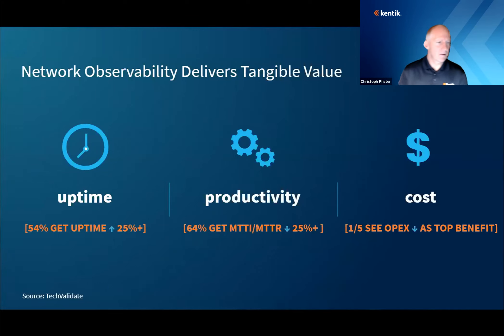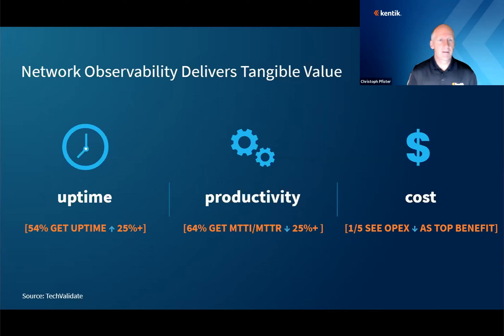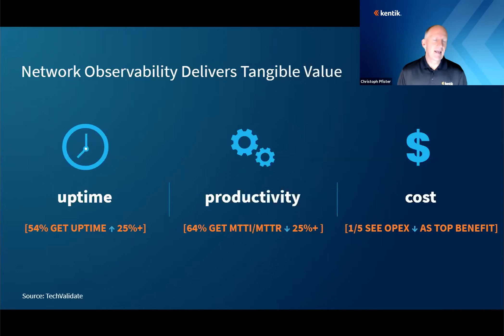Here's what they told us: over half of them get better uptime using network observability; 64% get their mean time to innocence or mean time to repair down, which is a big benefit for network operations teams; and quite a few see OPEX cost decreases. That's how you sell this to your manager. But beyond the numbers, what's also very telling is the companies that use Kentik for network observability across their organizations — with use cases like troubleshooting and capacity planning — are super happy.